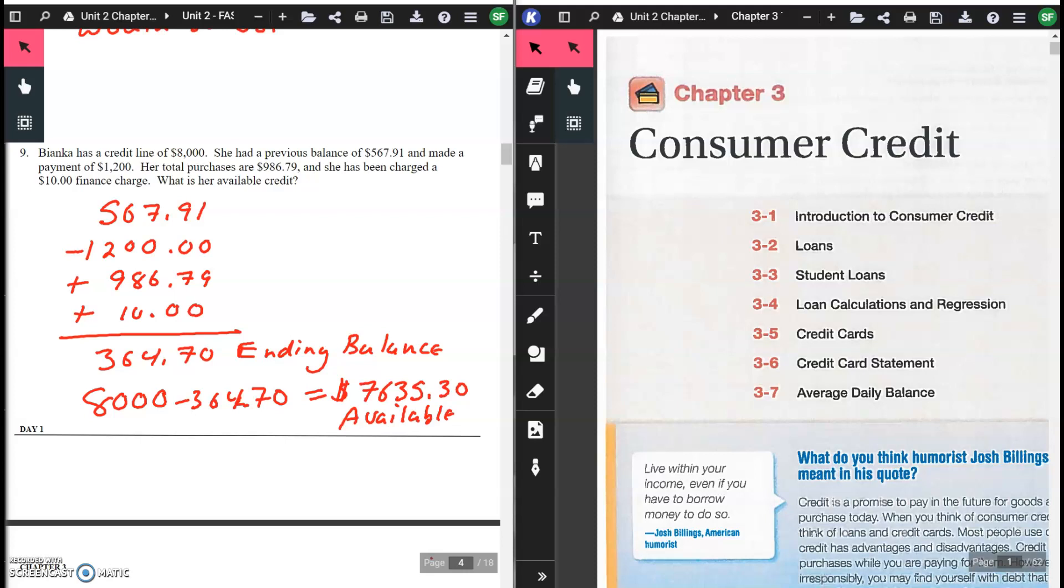We're going to start with her previous balance, $567.91. She made a payment of $1,200, so we're going to subtract that out of her account. Her total purchases were $986.79, so we're going to add that in. We're trying to figure out how much credit she has left. Think of a credit as a starting point, that's your starting balance. And then we have a finance charge of $10, so we're going to add that on there. Her ending balance was $364.70. $8,000 minus $364.70 gives you a total available balance of $7,635.30. That's how much she has left to spend on her credit card.